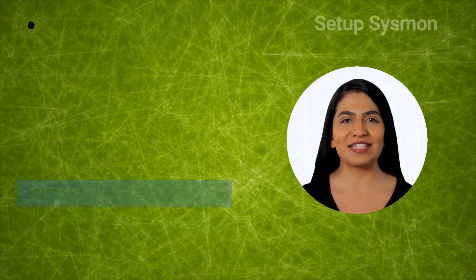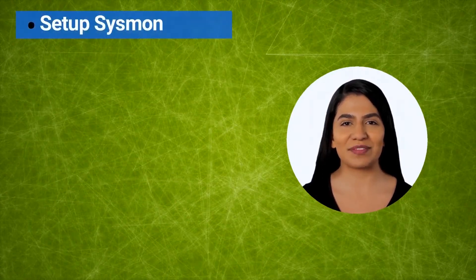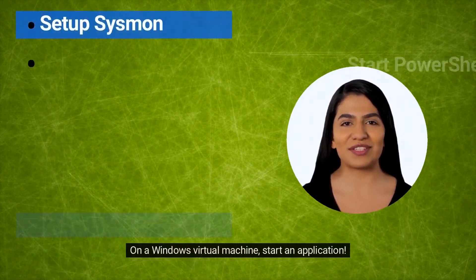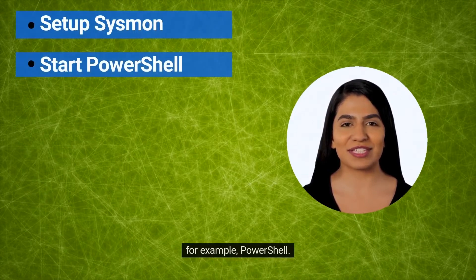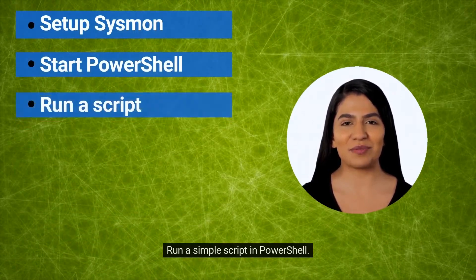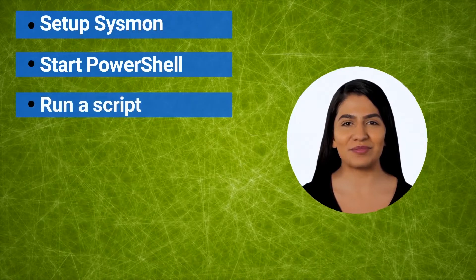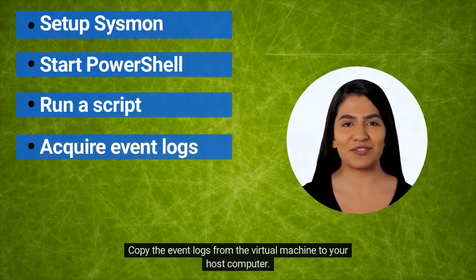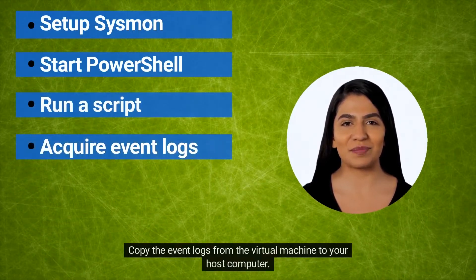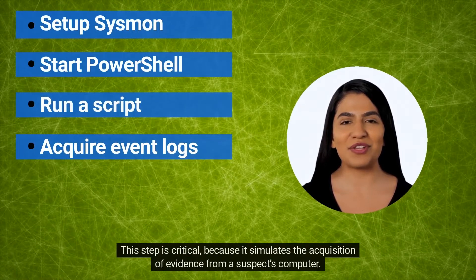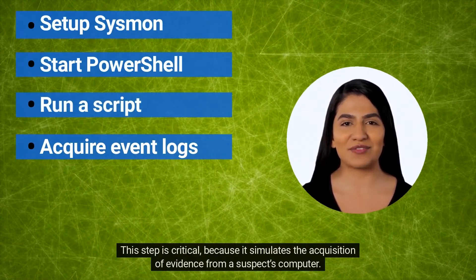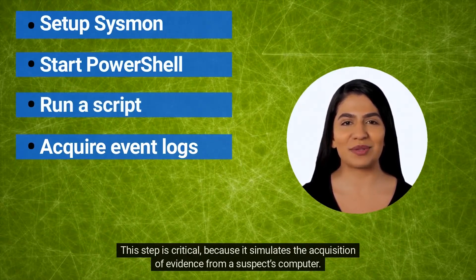Set up System Monitor first. On a Windows Virtual Machine, start an application — for example, PowerShell. Run a simple script in PowerShell. Then copy the event logs from the virtual machine to your host computer. This step is critical, because it simulates the acquisition of evidence from a suspect's computer.